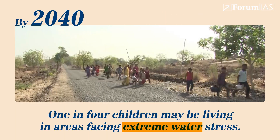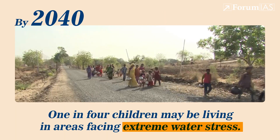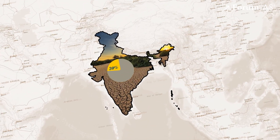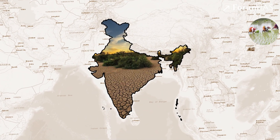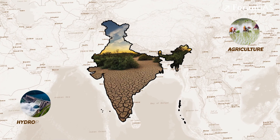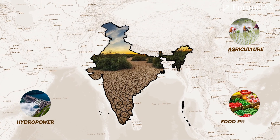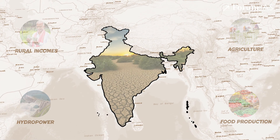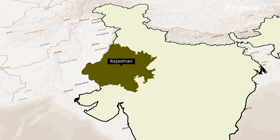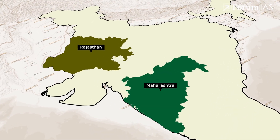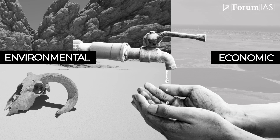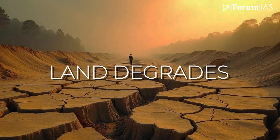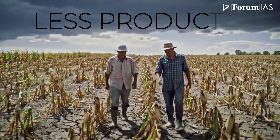In India, nearly 30 percent of the land is already undergoing degradation. Droughts impact agriculture, hydropower, food production, and rural incomes, especially in semi-arid regions like Rajasthan, Maharashtra, Telangana, and parts of the Deccan Plateau.